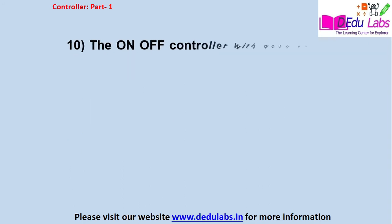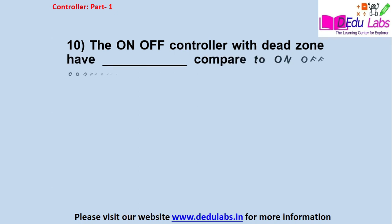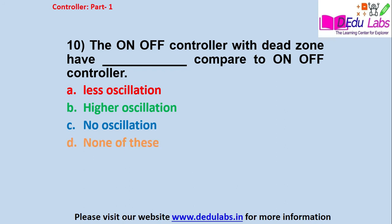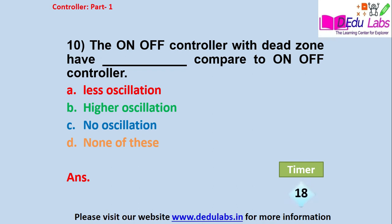Question number 10: the on-off controller with dead zone has blank compared to the on-off controller. Option A: less oscillation; Option B: higher oscillation; Option C: no oscillation; Option D: none of these. The answer is Option A, less oscillation.